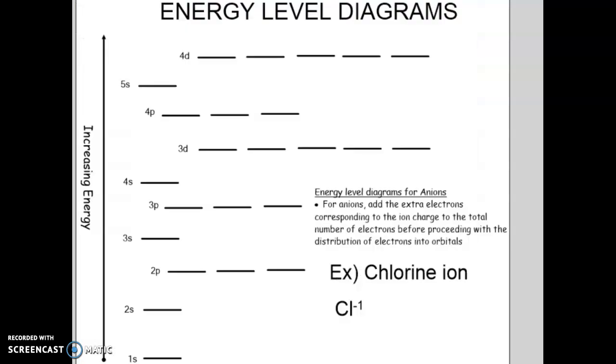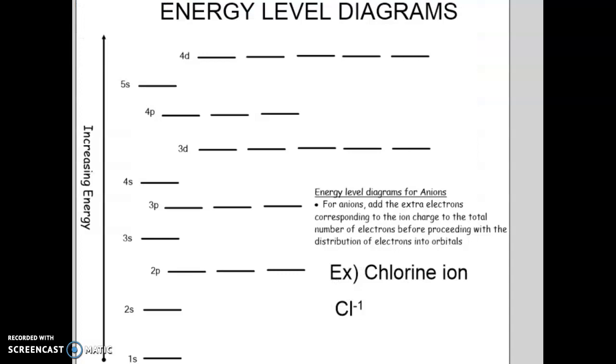Now, what does that mean for us here? Well, when you're drawing an energy level diagram for an anion, remember anions are negatively charged ions, right? So negative charges. All you're really going to do is add in the electrons that have been gained. So for example, if we were doing a chlorine ion, a chlorine ion is negative 1 in charge.